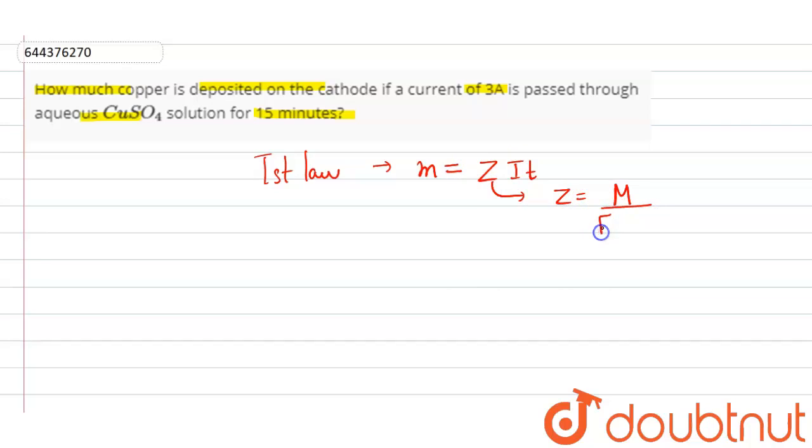And the formula of z is molar mass upon F into valency of the cation. So if we put the values in the formula, the molar mass of copper...